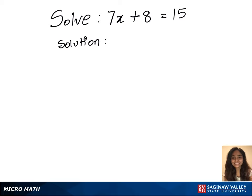To solve 7x plus 8 equals 15, we need to first subtract 8 on both sides. That will give us 7x equals 15 minus 8. 7x equals 7.